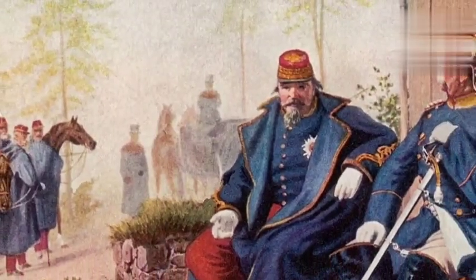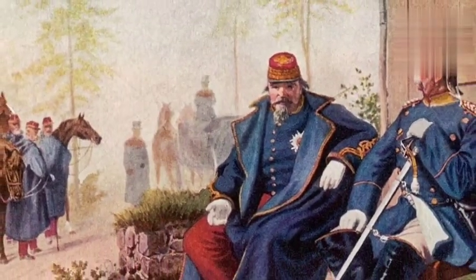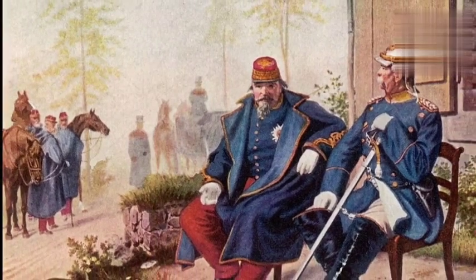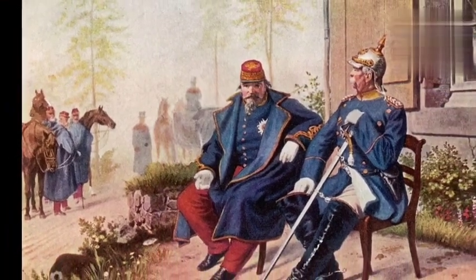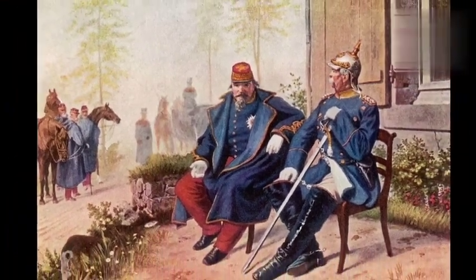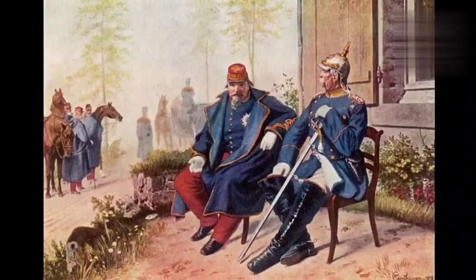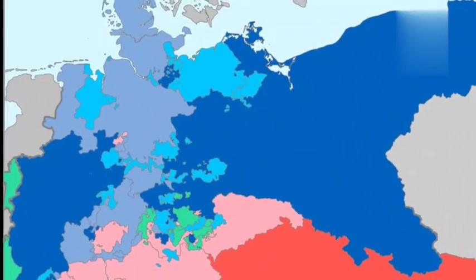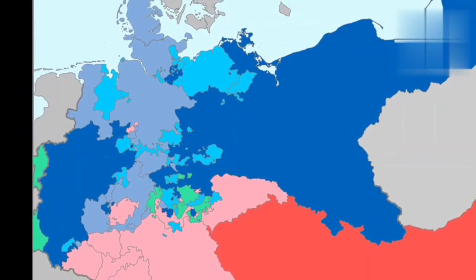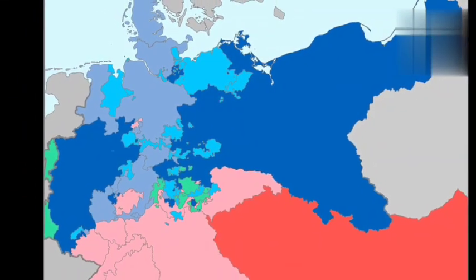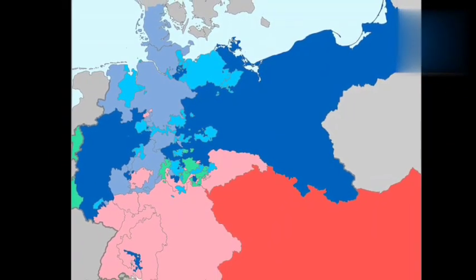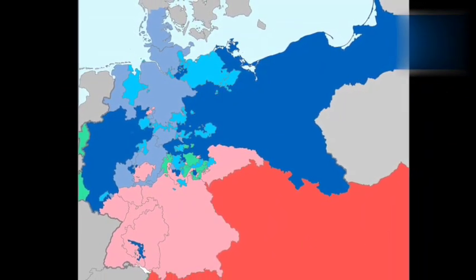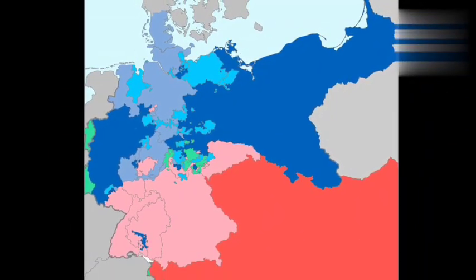Bismarck hoped he could resolve the constitutional crisis with foreign triumphs. He also wanted to establish Prussia as the leading German power. In 1864, Austria and Prussia, in the name of the German Confederation, took the duchies of Schleswig and Holstein from Denmark.